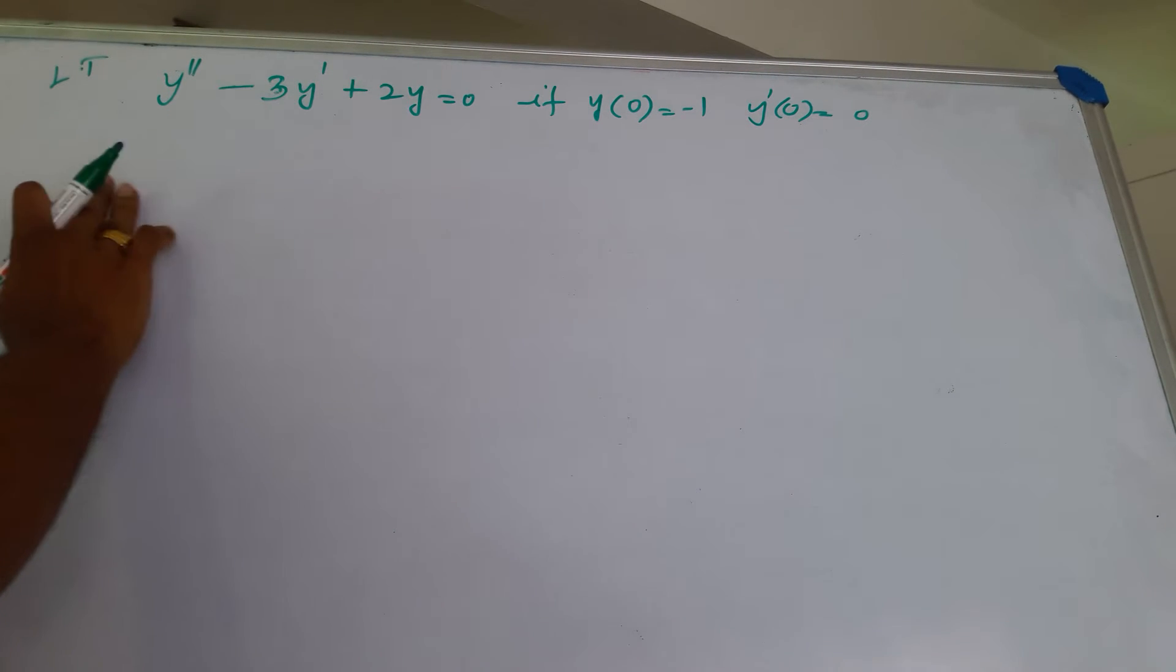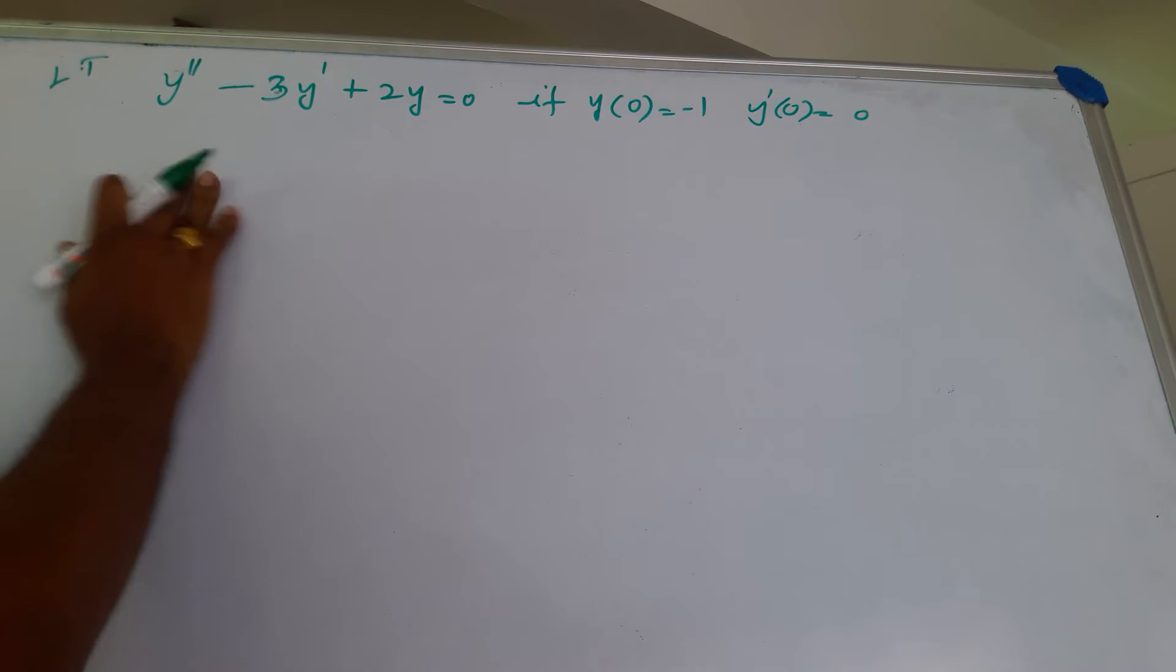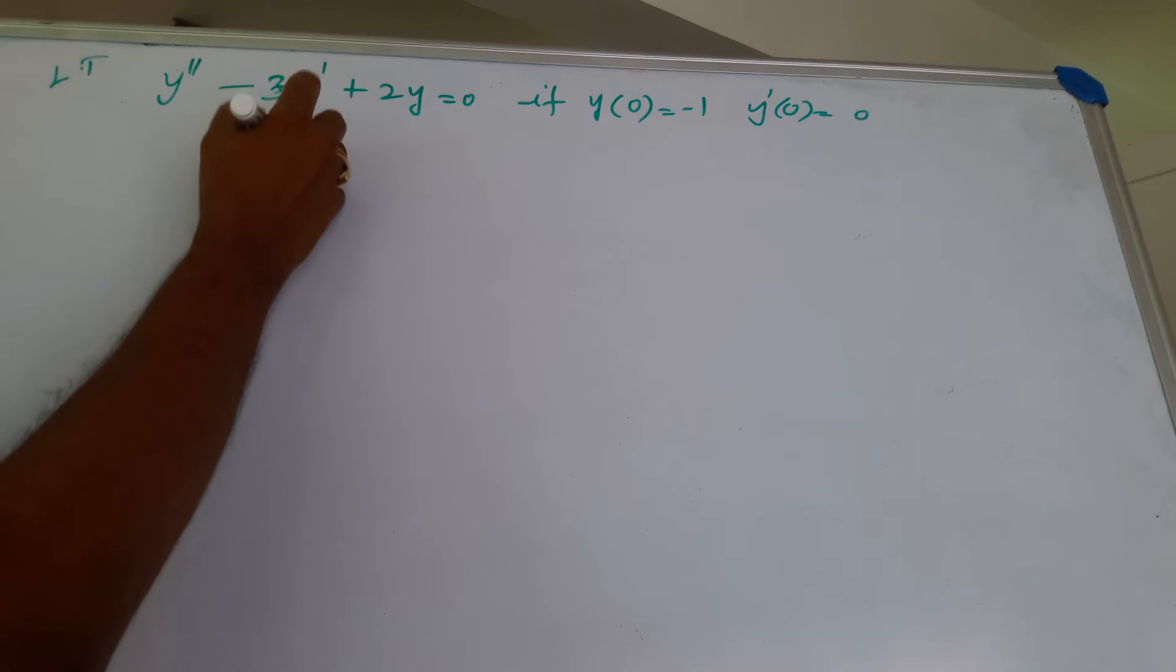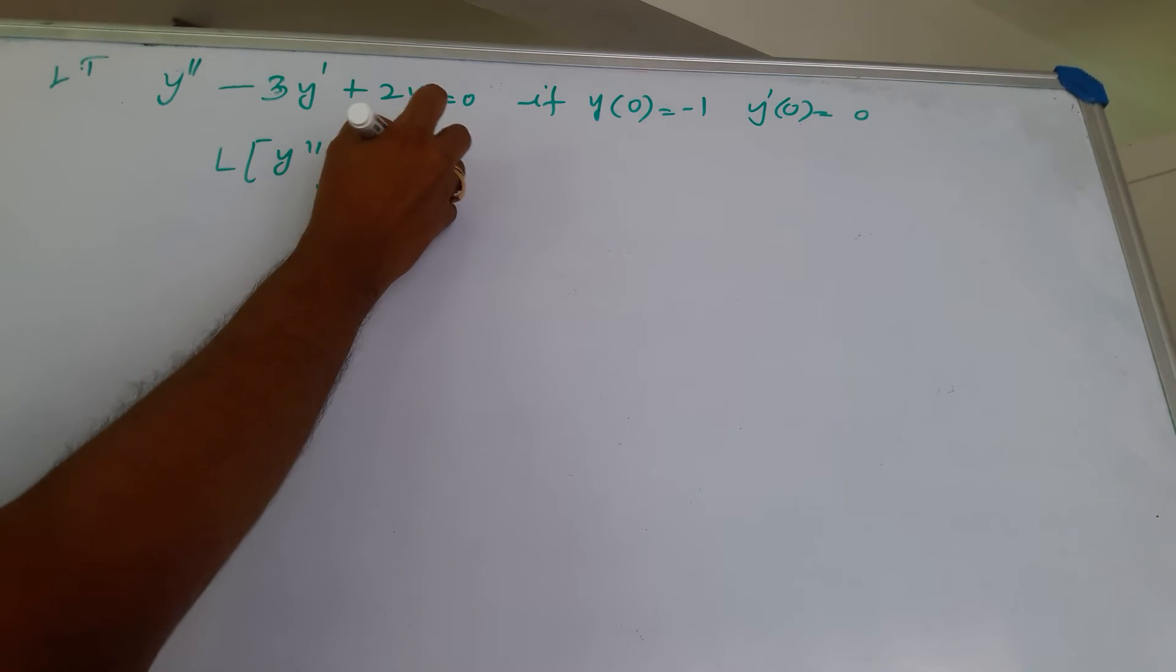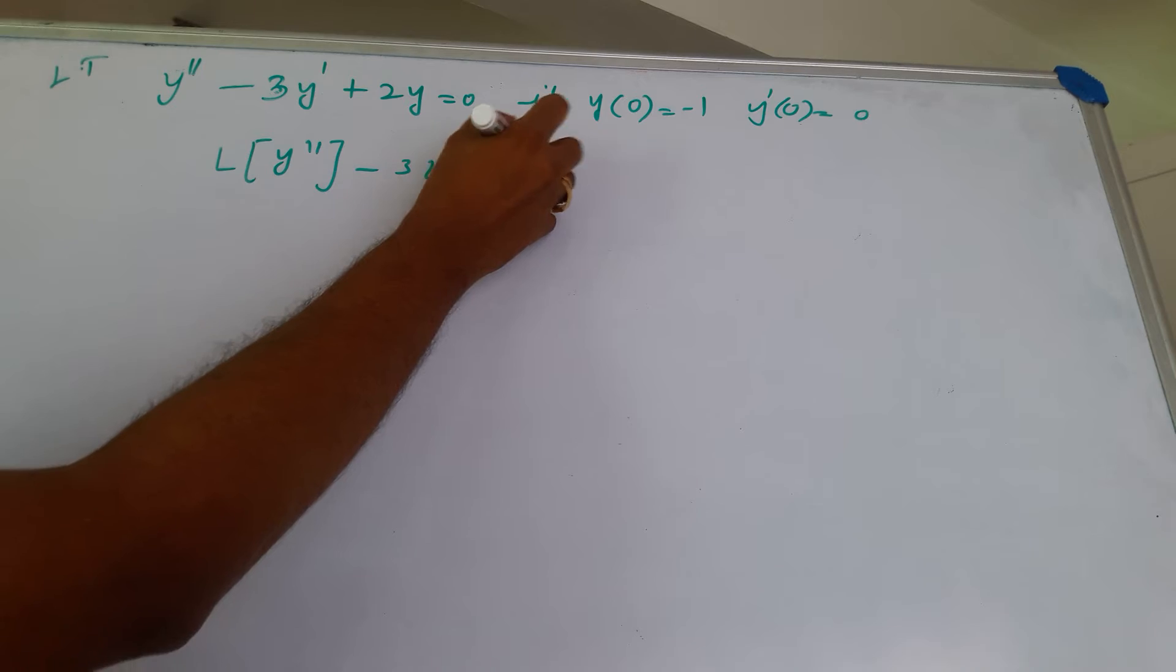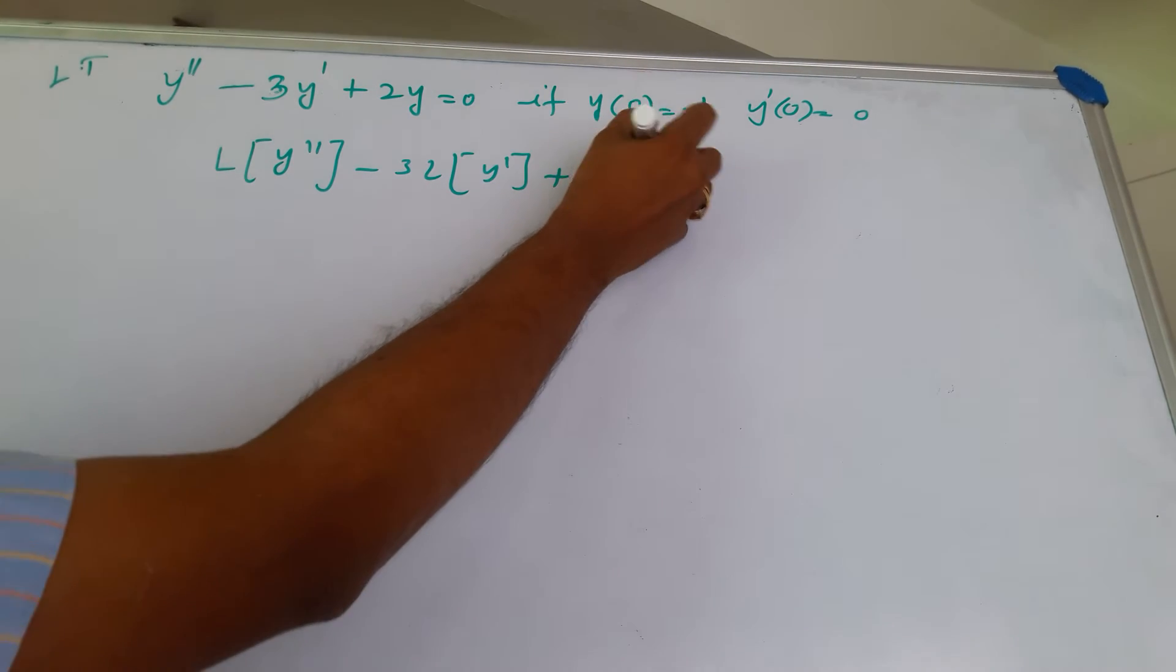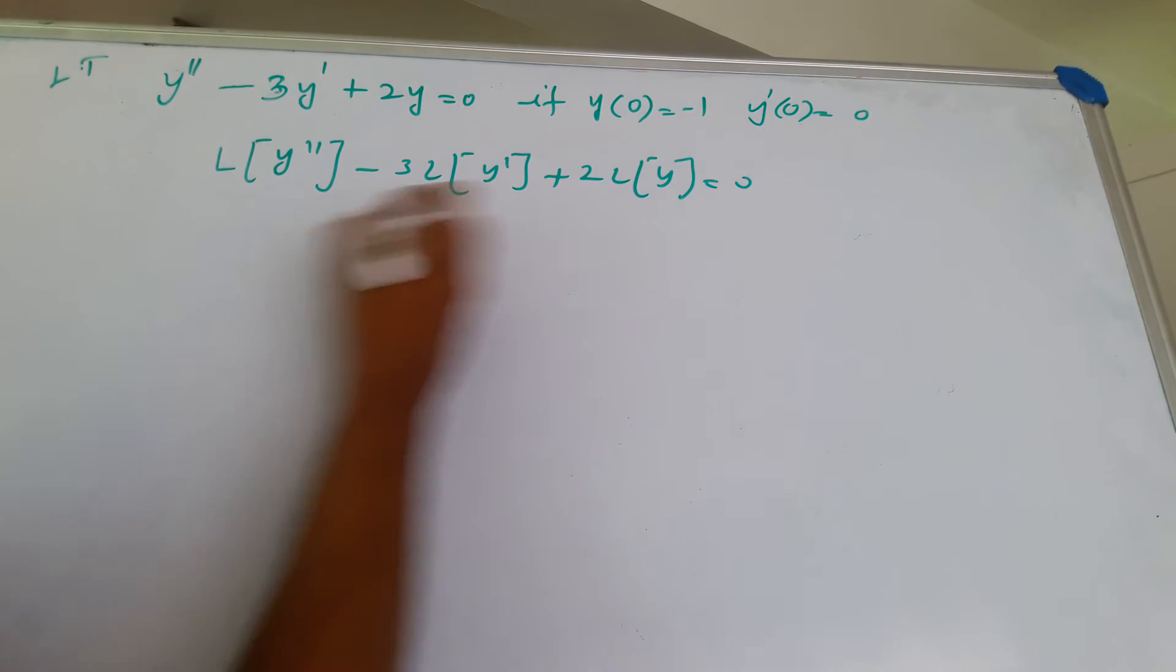Let us solve this by using Laplace transforms. Applying Laplace transforms on both sides of the equation, Laplace transform of y double prime minus 3 Laplace of y prime plus 2 L of y equals 0.